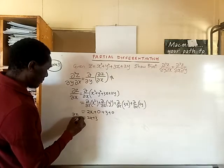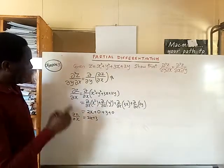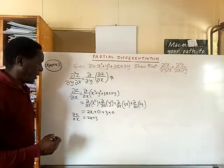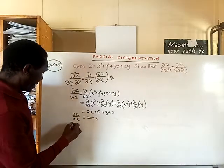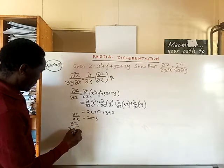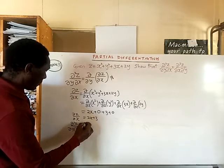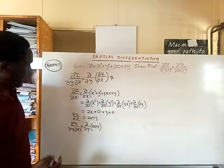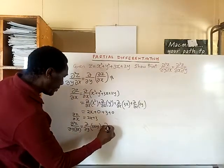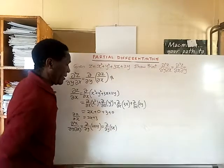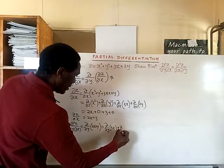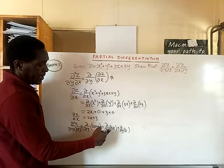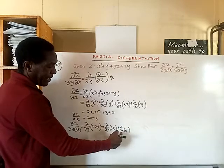Now we differentiate 2x + 3 partially with respect to y, since we already differentiated with respect to x first. So the second partial derivative of z — with respect to y after first doing it with respect to x — is equal to the partial derivative with respect to y of (2x + 3). Because we are now differentiating with respect to y, the term 2x is treated as a constant, giving 0, and 3 is also a constant, giving 0.